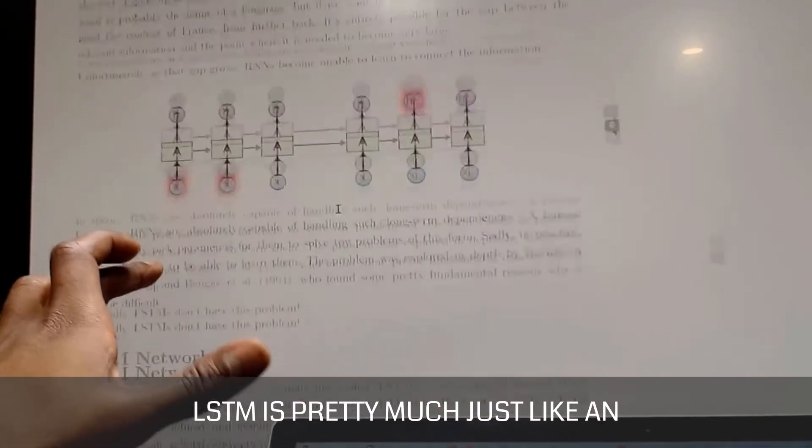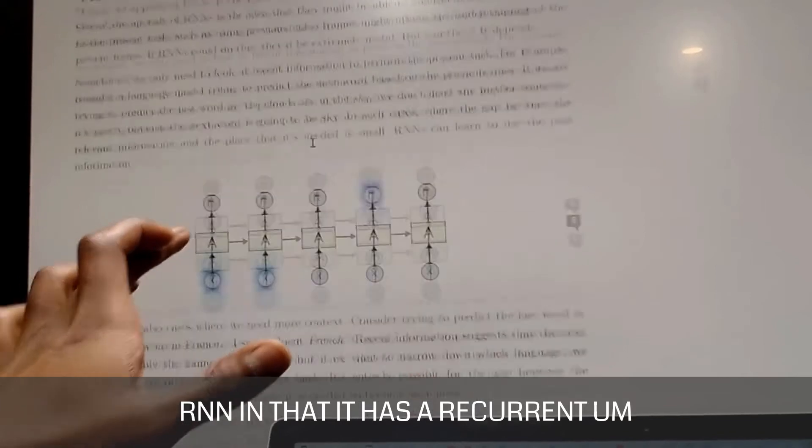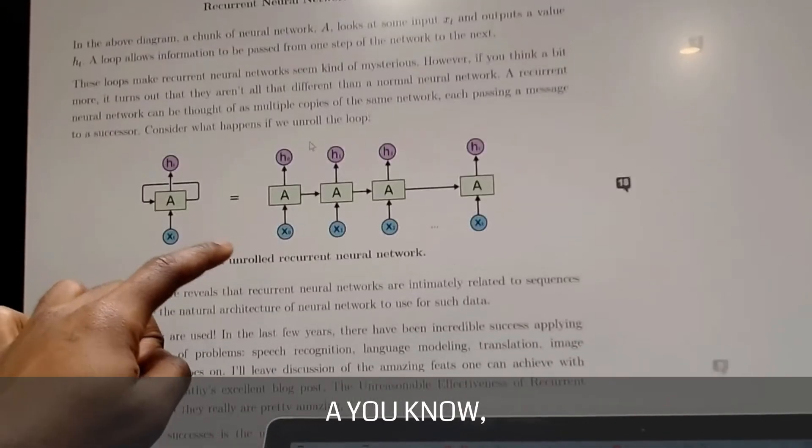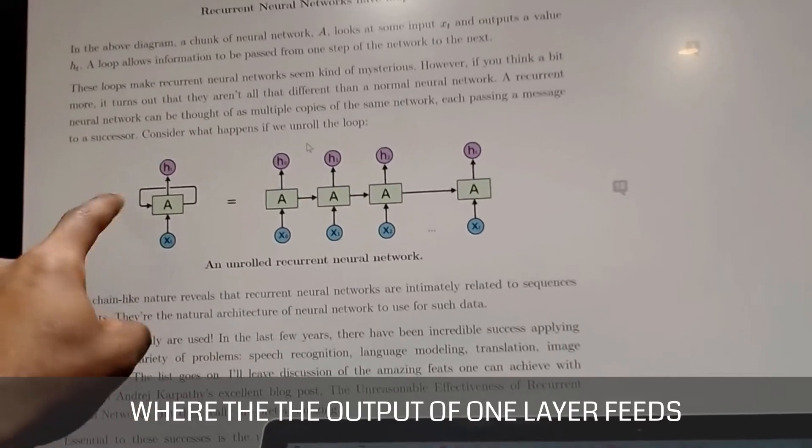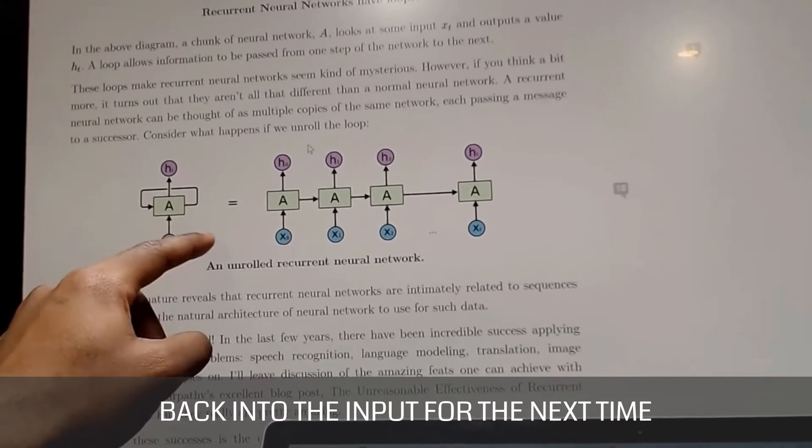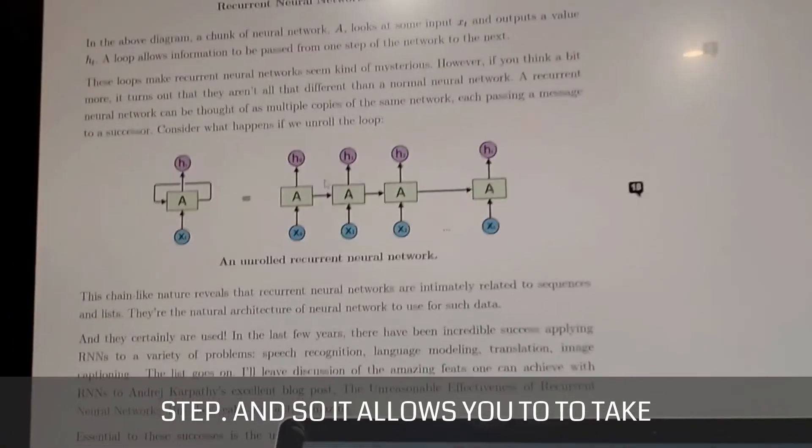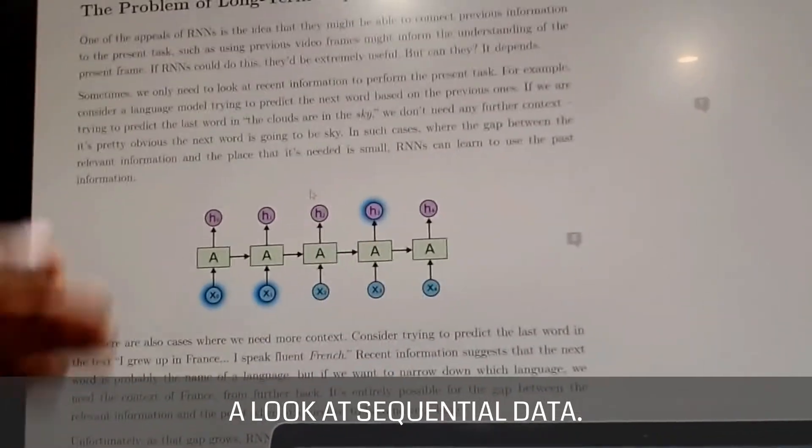An LSTM is pretty much just like an RNN in that it has a recurrent structure. It's a version of a recurrent neural network where the output of one layer feeds back into the input for the next time step. And so it allows you to take a look at sequential data.